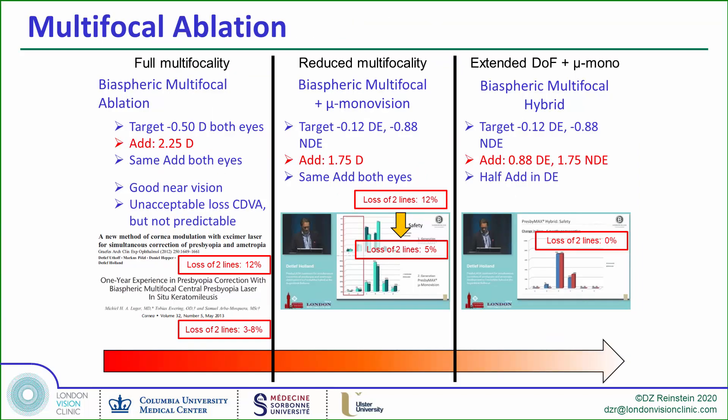Multifocal corneal ablations have been around since the early 90s. The latest system uses a biaspheric multifocal corneal target surface, originally performed in both eyes, but because of poor safety and contrast, several iterations have come since to reduce the multifocality and increase anisometropia. The use of these profiles is still quite limited due to loss of contrast and reduction in quality of vision, particularly at distance and at night.